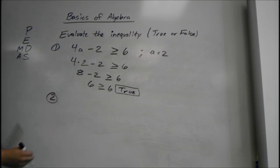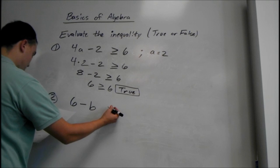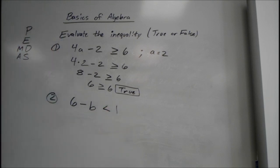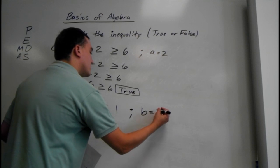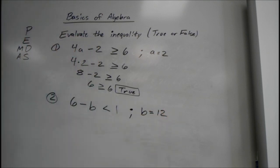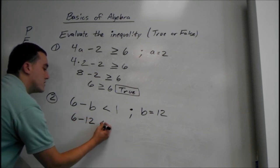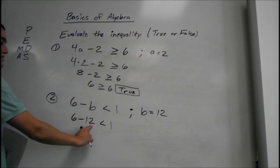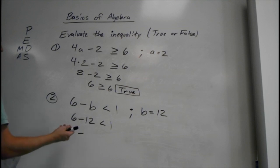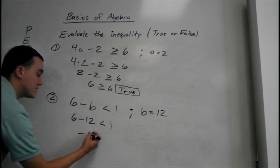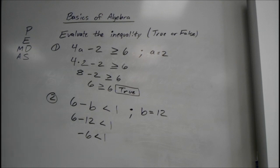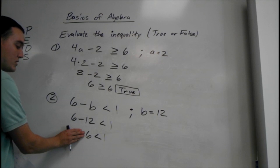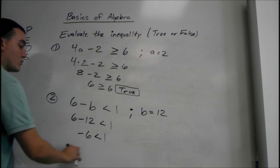The other one: we have 6 minus B is less than 1, where B is 12. So we have 6 minus 12 is less than 1. We have a lower number minus a higher number — that's going to give us a negative. 12 minus 6 is 6, but since we're subtracting the bigger number from the smaller, it's negative 6. Negative 6 is less than 1. Just because 6 is a bigger number, if it's negative it's actually smaller than 1. So this is also true.